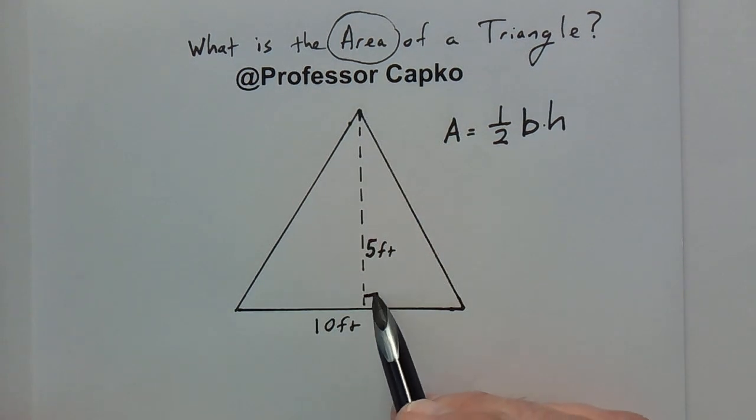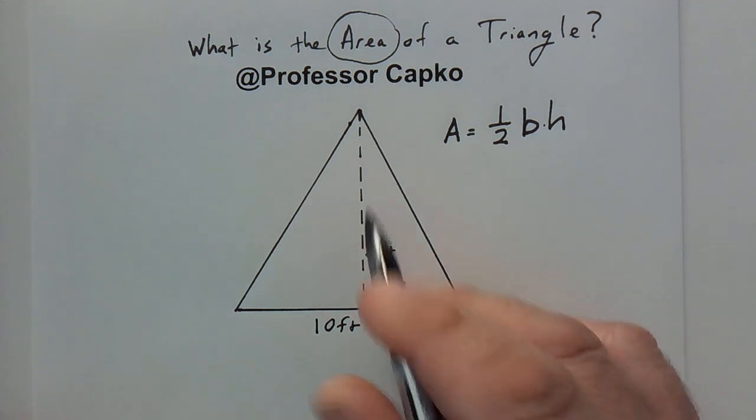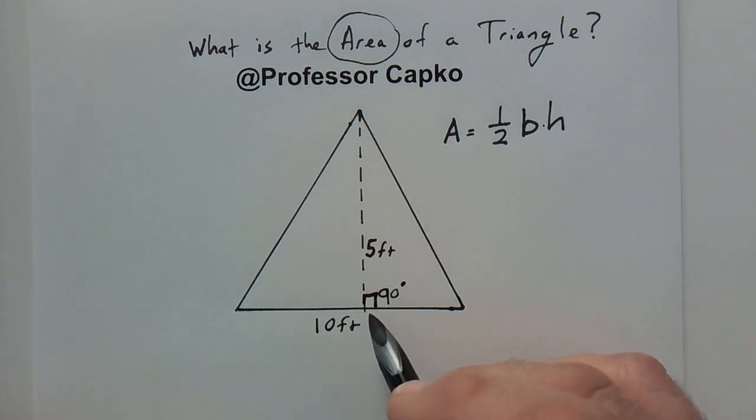You often see this little box in the corner that indicates that it's 90 degrees. In other words, it's perpendicular to the bottom. So that's another good indication. It's not always given, but if it is, if you just see that little box, that tells you that this line is perpendicular to this line here. In other words, it's 90 degrees.